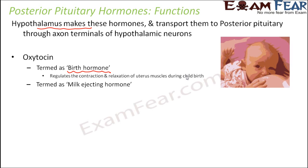Oxytocin is also known as the milk ejecting hormone because it regulates milk expulsion during lactation. There is an important difference between prolactin and oxytocin. Prolactin helps the mammary glands to grow and develop so that they can produce milk. Oxytocin, on the other hand, causes contraction of the muscles of the mammary gland so that the milk can be brought out and sucked. So oxytocin does not help in the production of milk — it just helps the milk to be ejected out of the mammary gland. That is why it is called the milk ejecting hormone.